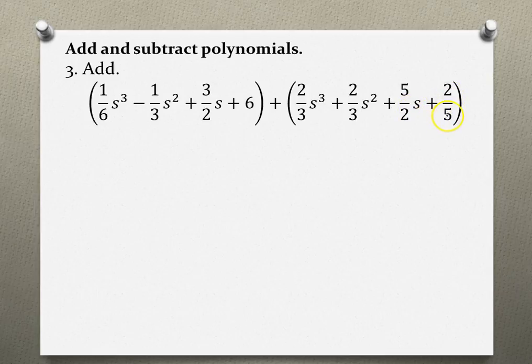Because there's an addition sign in the middle, we can drop the parentheses and combine like terms. Like terms are variables with the same degree and exponent, and we add their coefficients together.